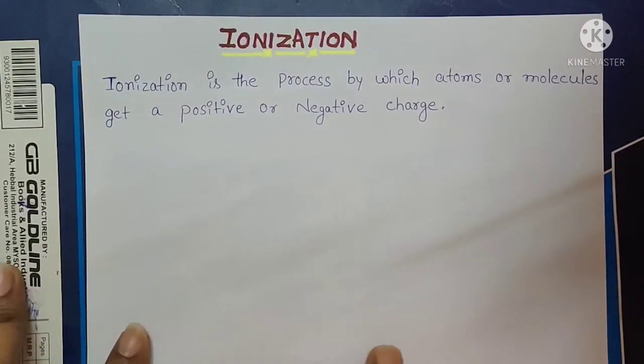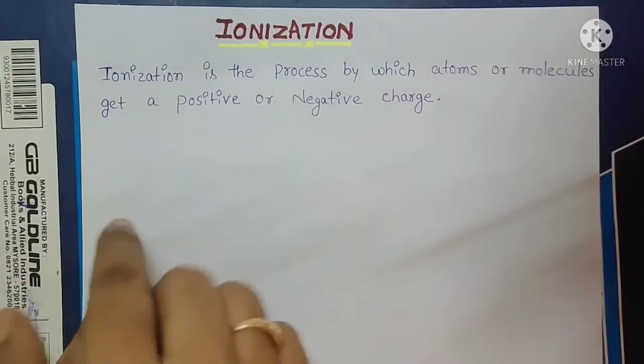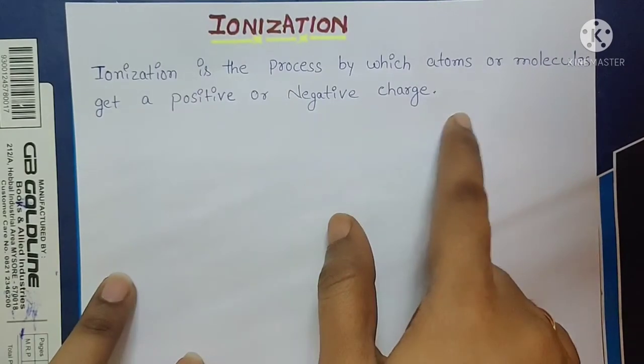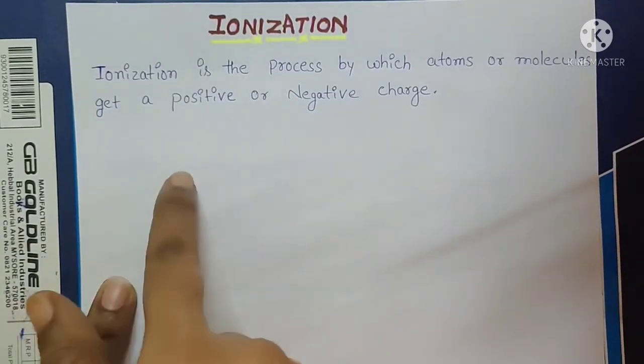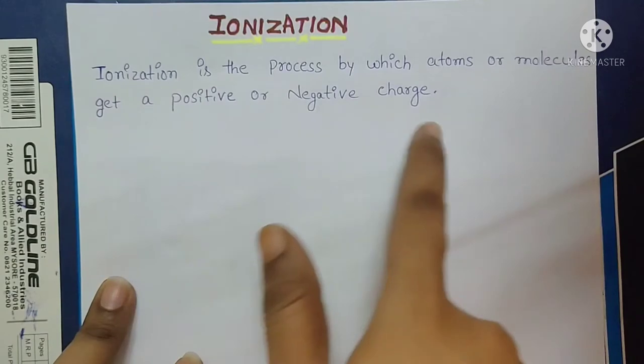See here, we will start with the definition. Ionization is the process by which atoms or molecules get a positive or negative charge.